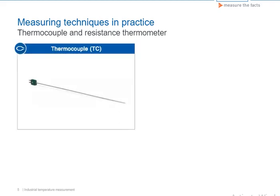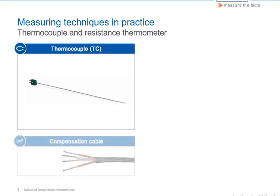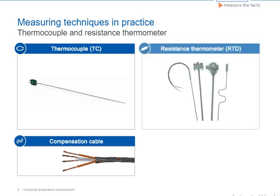Thermocouples and resistance thermometers are the most widely used temperature measuring techniques in industrial measurement technology. We can kick off by having a closer look at the functional principle of the thermocouple. We'll also examine the compensation cables, which are often needed for connecting the thermocouple correctly, followed by a look at resistance thermometers.